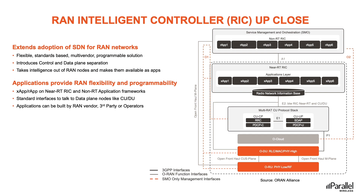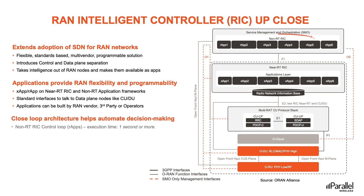The RIC is consistent with SDN concepts in that it separates the control plane and data plane for RAN control functions, allowing MNOs to independently scale each as required. In Open RAN, the gNodeB has been split between the DU and the CU, and the CU has been split into the CU-CP and CU-UP. The RIC further separates the control plane on the network from the RAN and the data plane nodes.